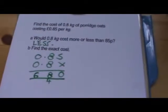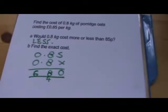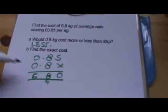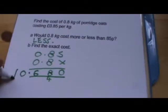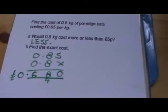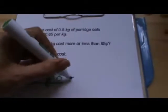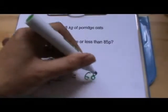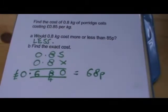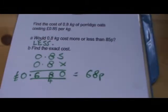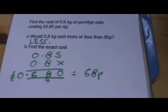So where does the point go? Remember, we're expecting an answer that is less than 85. So if we're talking about pounds, the point must go there. It's no pounds and 68 pence. Well, we could just say that equals 68p. So the exact cost of 0.8 kilograms of porridge oats is 68p.